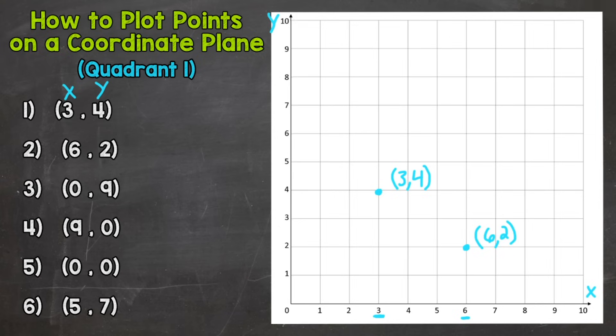Number three we have (0, 9). So our x is actually zero, we don't move over at all. So we stay put here at zero and we go up 9, and we plot our point directly on our y-axis because again our x was zero so we did not move over at all.